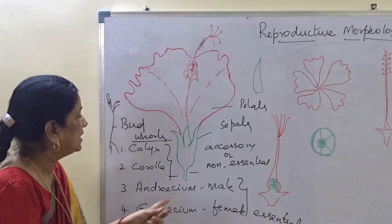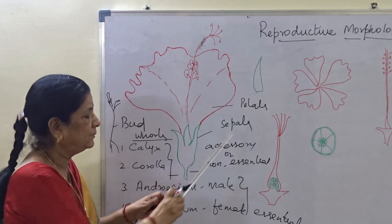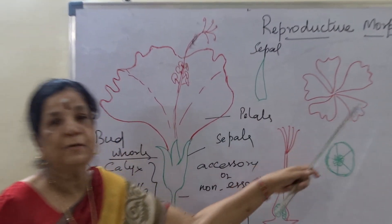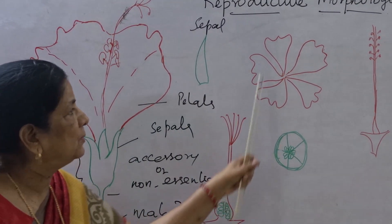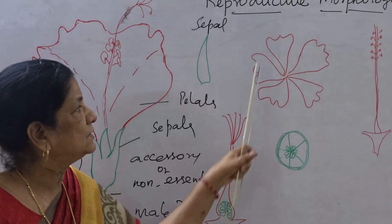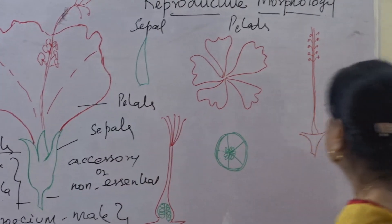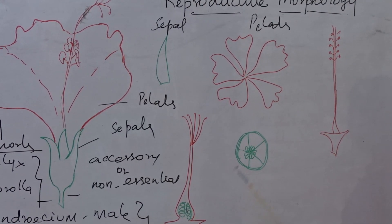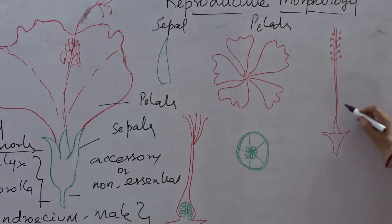When the calyx is separated, each unit is a single sepal. These are the petals — corolla is formed of petals. When the petals are removed, we can arrange them like this. This one is the androecium of the hibiscus, or shoe flower. Look — it is having a long column-like structure that is called the staminal column.